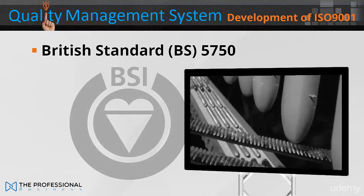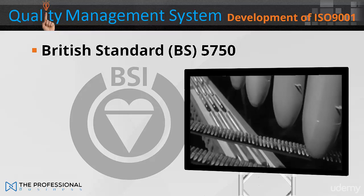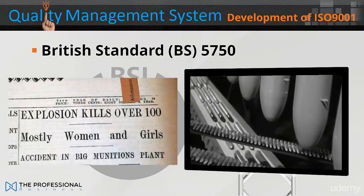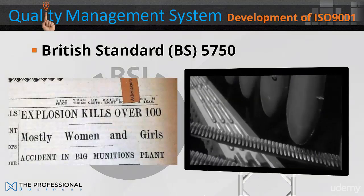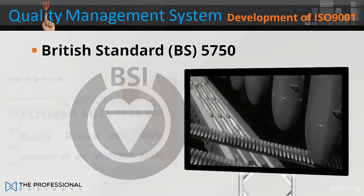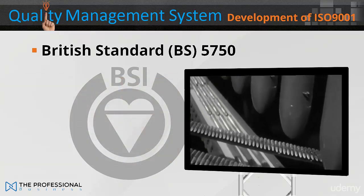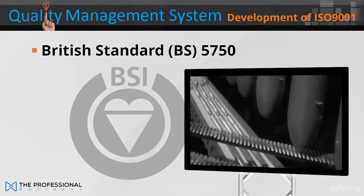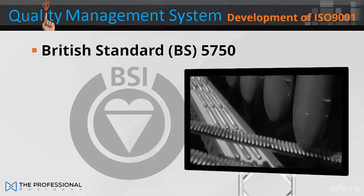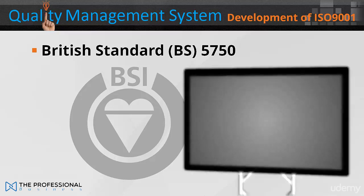During World War II there were many quality problems in British industries, such as munitions, as bombs were actually exploding in factories as they were being assembled. The solution adopted required factories to document their manufacturing procedures and maintain records that the procedures were being followed. This type of standard was known as a management standard because it specified not what the manufacturing was, but how the manufacturing process was being managed.